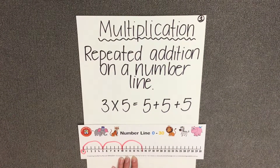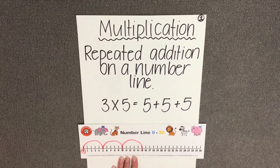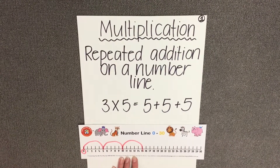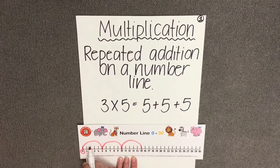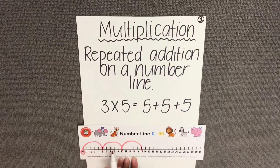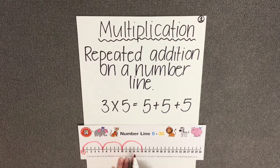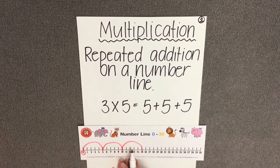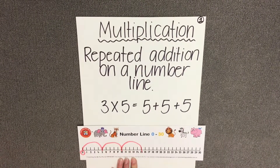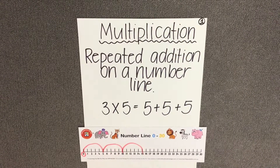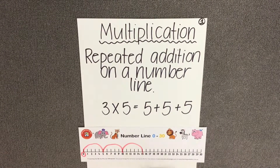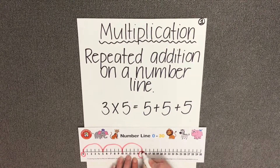We need to just double check that we've added our 3 groups of 5. So that's 1 jump of 5, 2 jumps of 5, 3 jumps of 5. Therefore, your answer to 3 times 5 is 15.